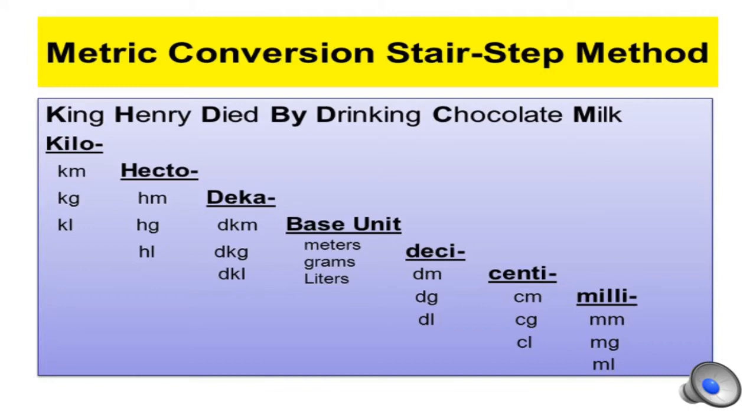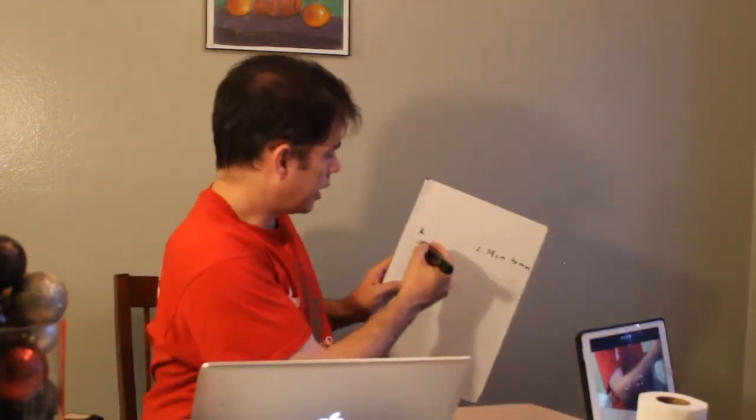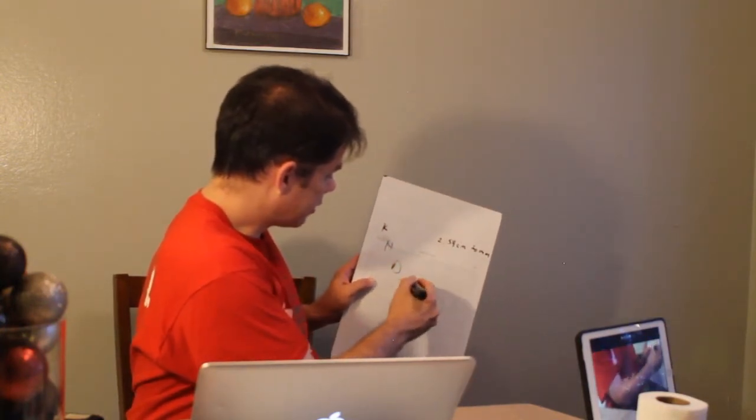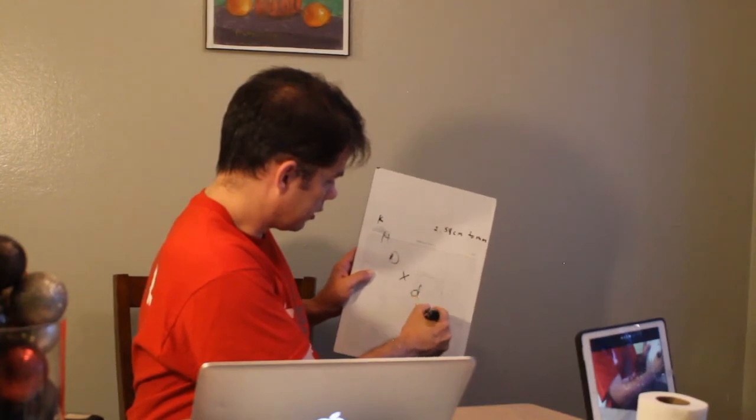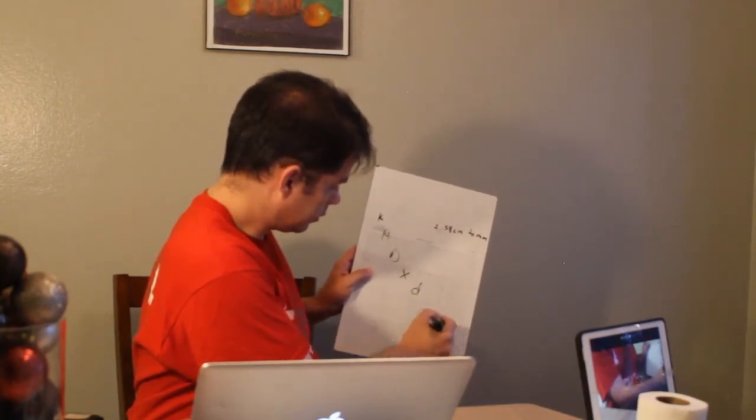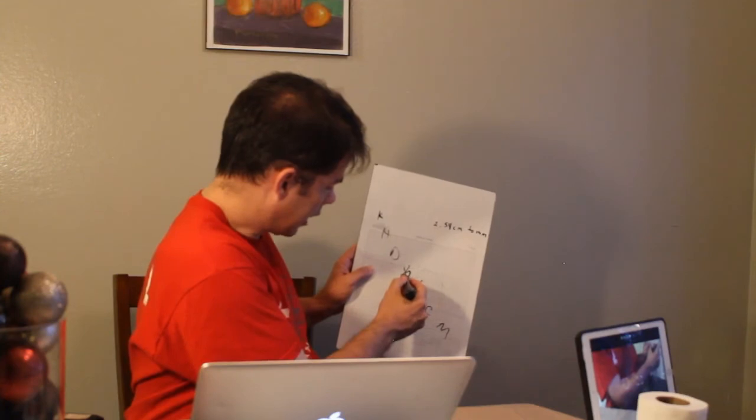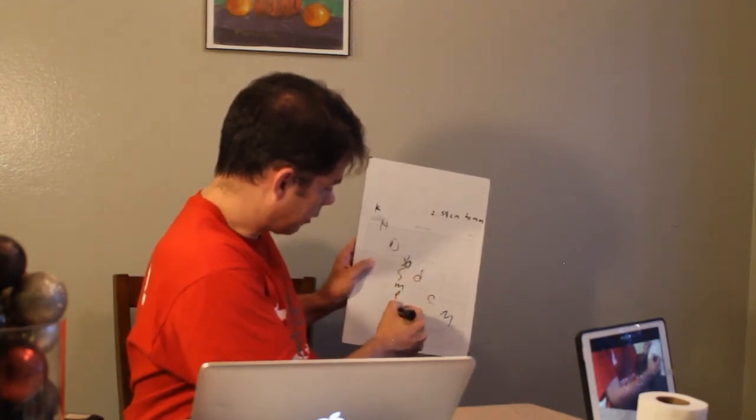One way to remember this, because honestly this can get quite confusing, is by this mnemonic. King Henry died by drinking chocolate milk. Kilo is king. Hecto is Henry. King Henry died as deca. By is our base unit. Drinking is deci, chocolate is centi, and milk is milli. And that could be meter, liter, or grams. Whatever that base unit is.